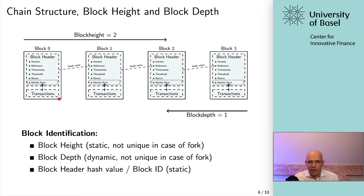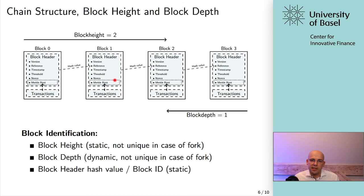The way this chain structure is created: you have block zero with all of its contents, and block zero has a hash value. Assuming this is the latest valid block, everyone else would try to create a new block on top of it. 'On top of it' means taking the hash value of the block header of block zero and adding it as an input in block one. Then you have all the contents. Once block one is found, block one has a hash value, and that hash value is then put into the next successor — block two — and so on.